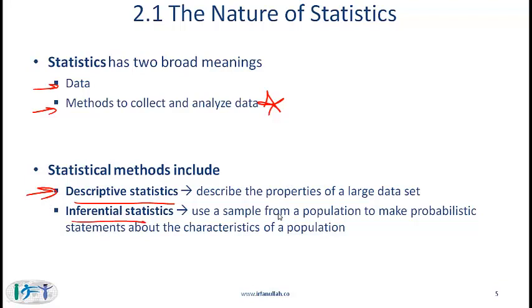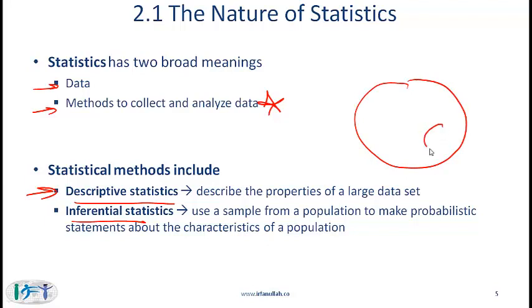Inferential statistics use a sample from a population to make a probabilistic statement about the characteristics of a population. In other words, if we have a population that is too large to analyze and we pull a sample out of this population and use the data in the sample to make an inference about the population, then those techniques are referred to as inferential statistics, and this material will be covered in a later reading.